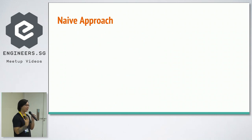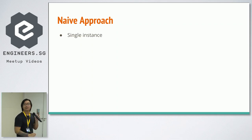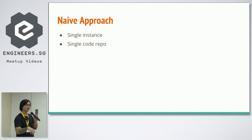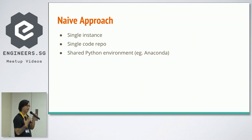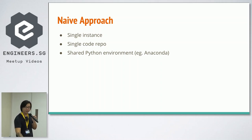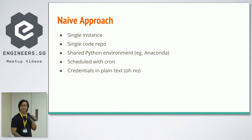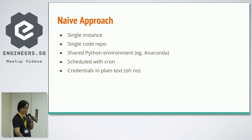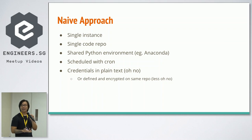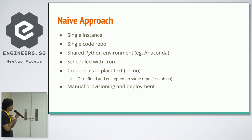I'm going to run through what a naive approach might look like. It's fairly simple — just a bunch of scripts you dump on a server. You start with a single instance, a single code repo, a shared Python environment like Anaconda, and you schedule it with Cron — maybe every day, every hour. In a naive approach, you might be storing credentials in plain text on your repo — please don't — or maybe encrypted on the same repo, which is less of a big problem but still not great. You might create instances by manually going in, deploying, and provisioning.